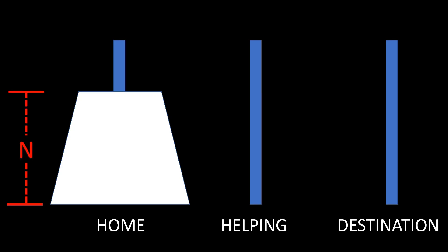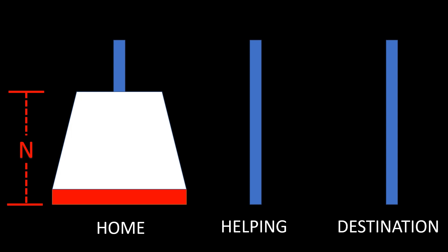Let's solve the general case where we have n disks to move. We assume we already have a function that solves the problem in the least number of moves — we are still to create it, but let's assume it already exists. This function only needs us to input the number of disks and the roles of each stack. The left stack is the home stack where the disks are initially located, the middle stack is the helping stack, and the right stack is the destination stack. The largest disk is at the bottom of our stack, so we need to free it by moving the top n minus one disks.